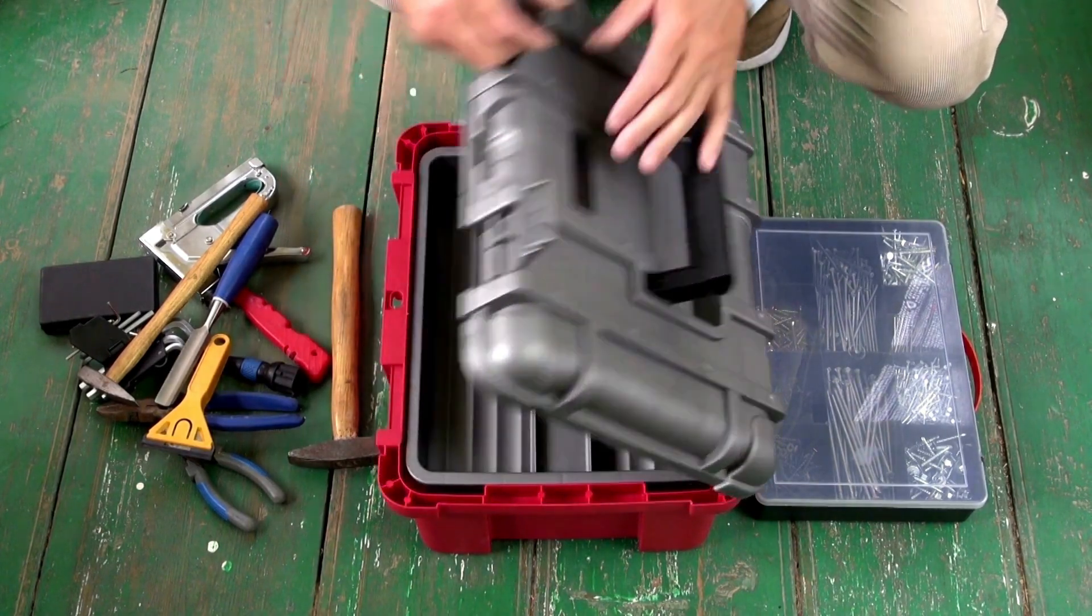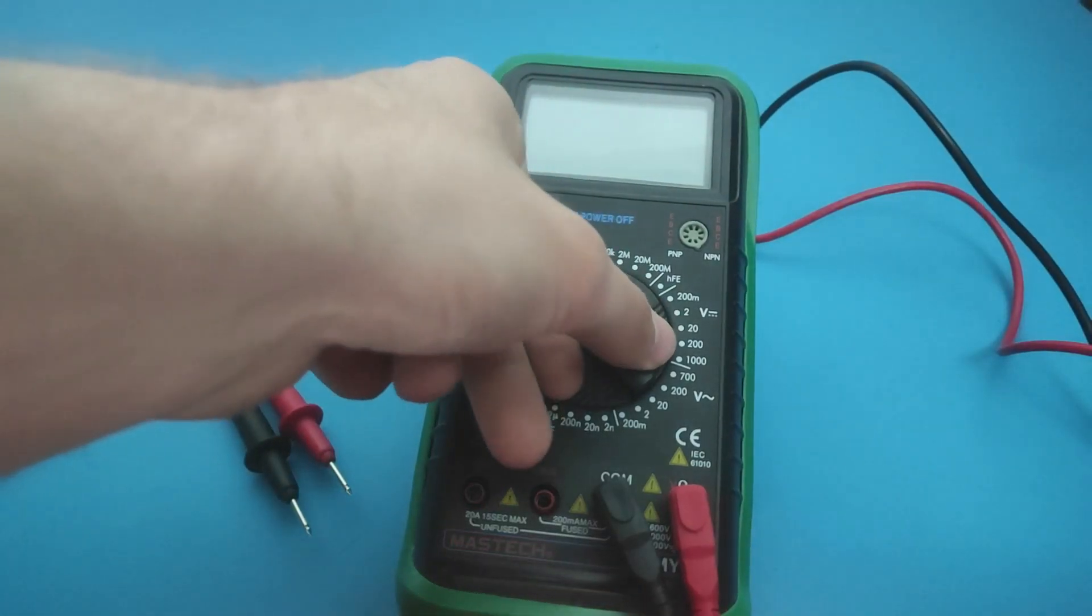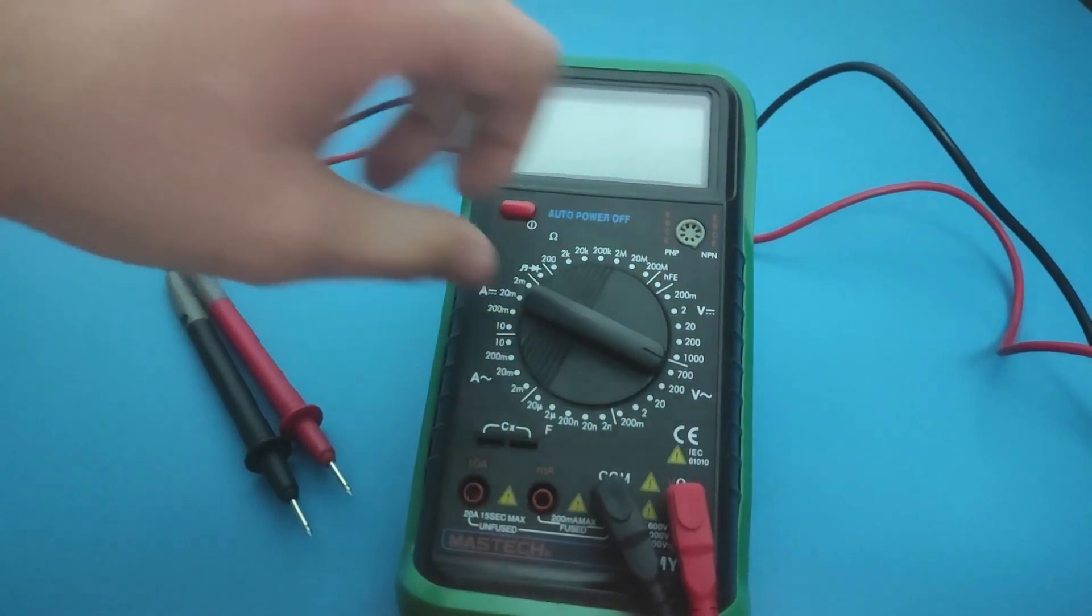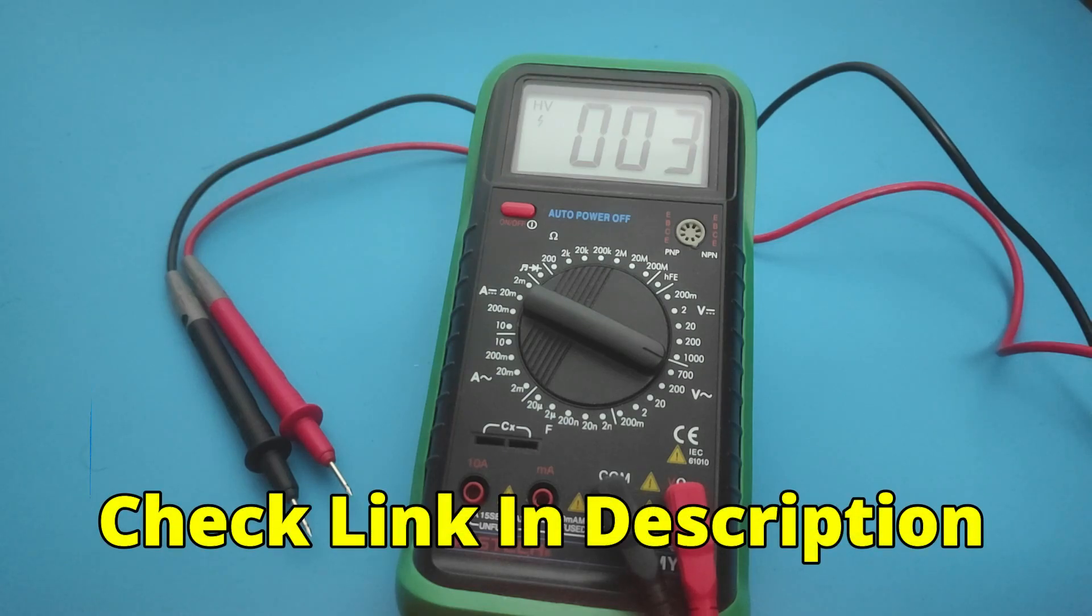Before we get started, let's see what tools we're going to use. The first and most important tool is the multimeter. The multimeter will help us determine which wire is hot, neutral, and ground.